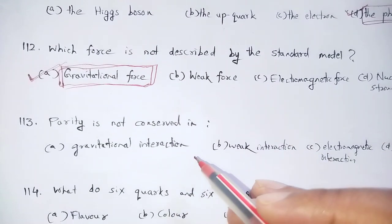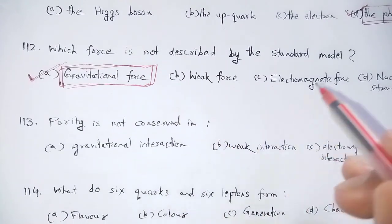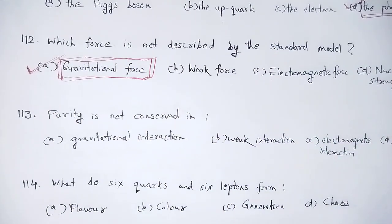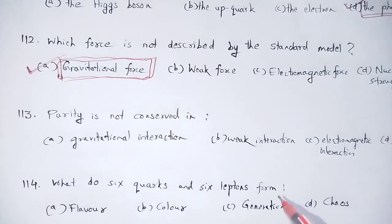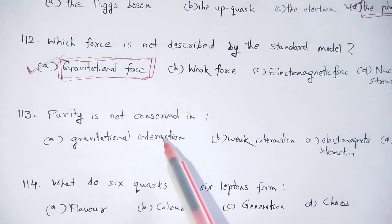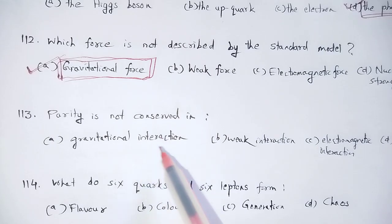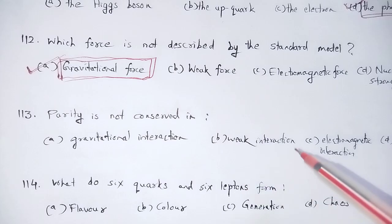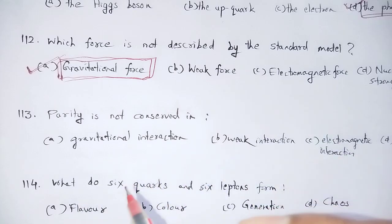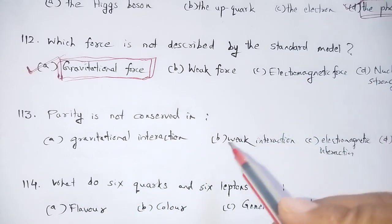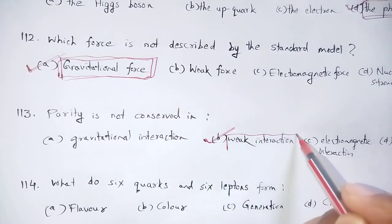Parity is not conserved in which interaction? Options: gravitational interaction, weak interaction, electromagnetic interaction, strong interaction. Parity is not conserved in weak interaction — option number B is correct.